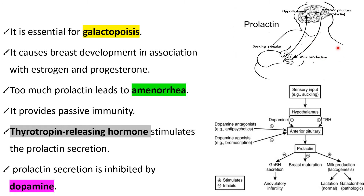A diagrammatic representation shows that when the baby sucks the mammary gland, signals are sent via sensory neurons to the hypothalamus. The hypothalamus then orders the anterior part of the pituitary gland to secrete prolactin. The prolactin command reaches the alveoli and stimulates the alveolar cells, and immediately milk production starts. The suckling act as the stimulus for production of prolactin hormone and thereby production of milk.